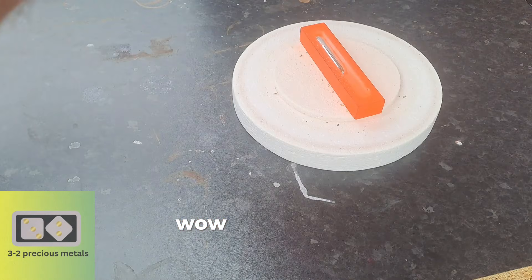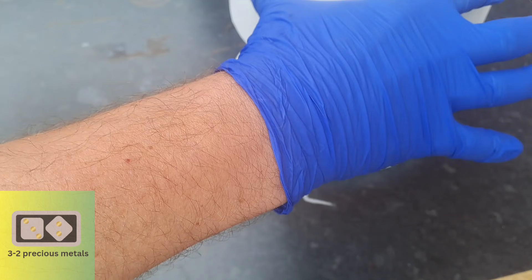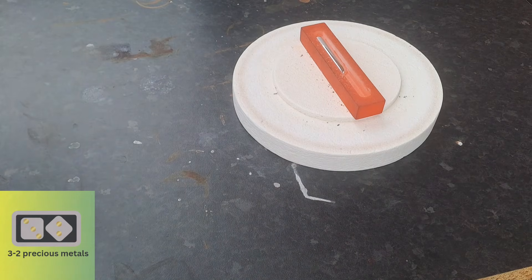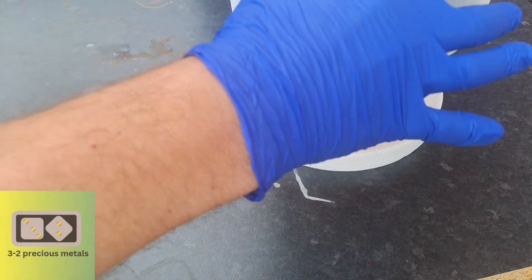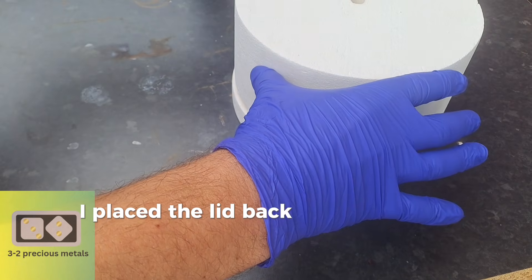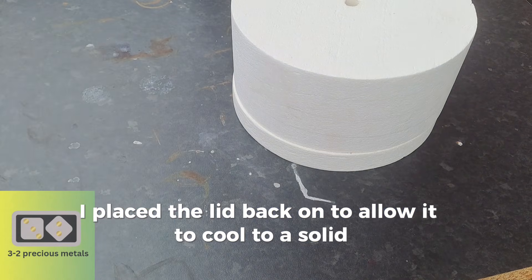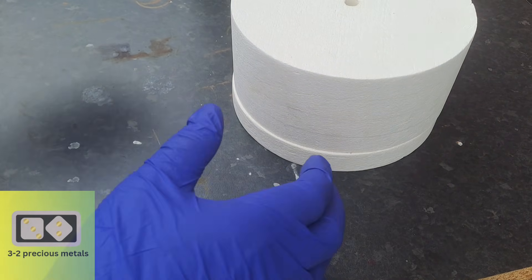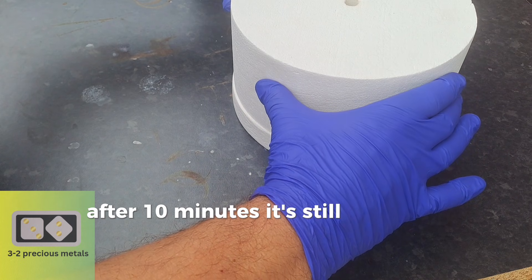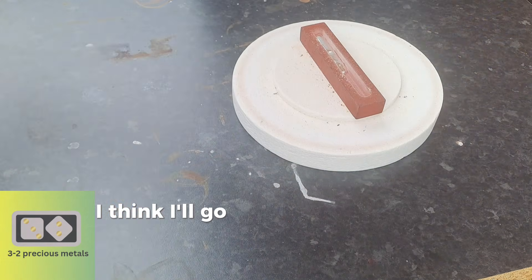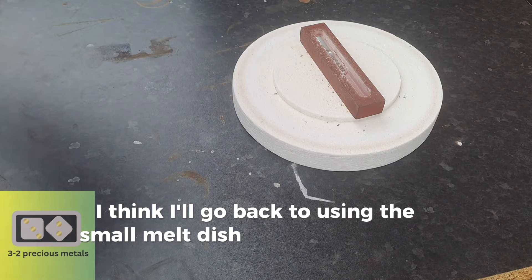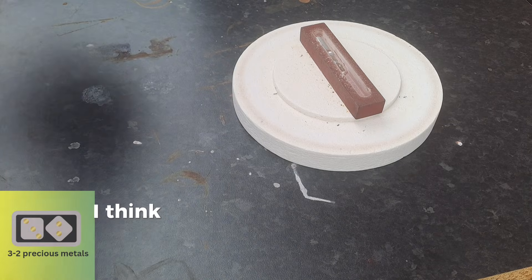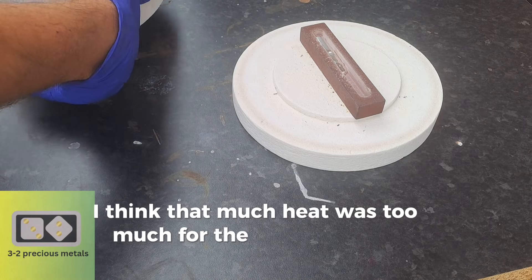Wow, that is hot. I placed the lid back on to allow it to cool to a solid. After 10 minutes, it's still red hot inside. I think I'll go back to using the small melt dish inside the furnace. I think that much heat was too much for the graphite mold.